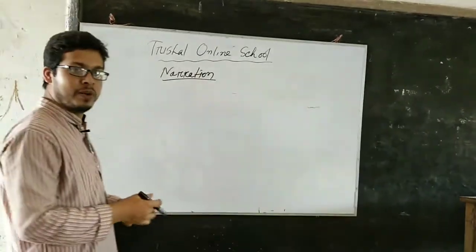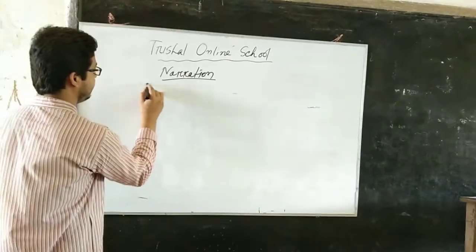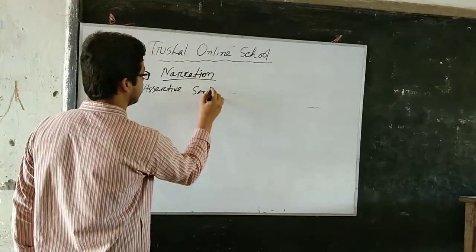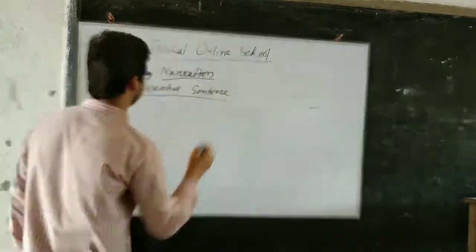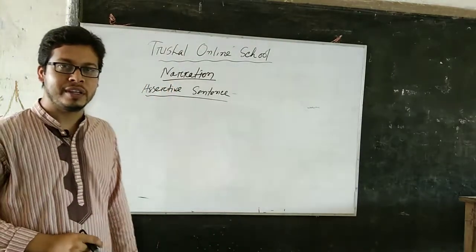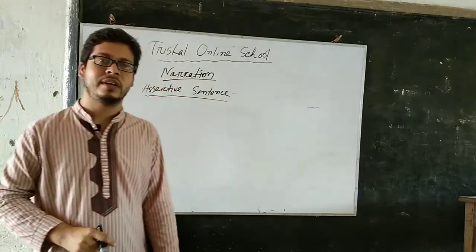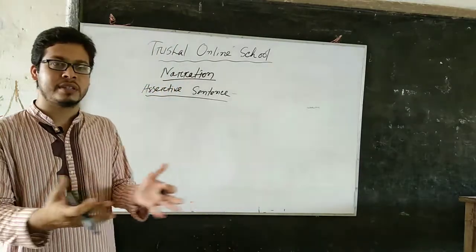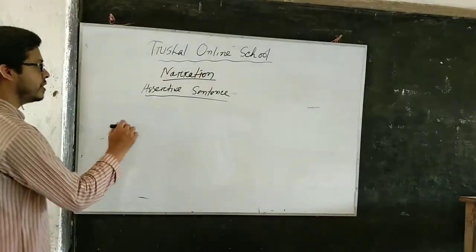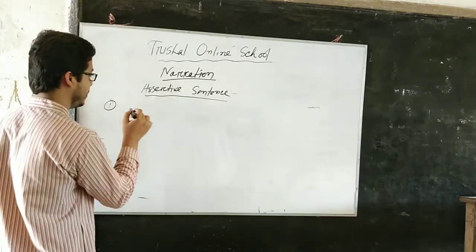We have learned the preliminary rules to change from direct narration to indirect narration. Now we shall go forward and learn step by step, sentence by sentence — then it will be very easy to understand. The first sentence type is the assertive sentence. Assertive sentences give a description of anything or any action. In an assertive sentence, 'say' is changed to 'told' if there is an object after the verb.